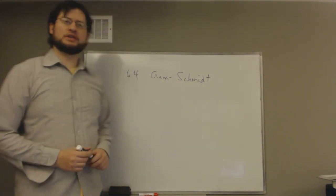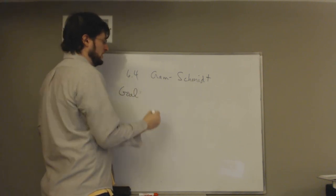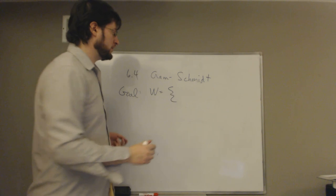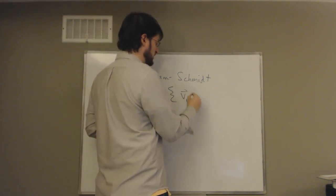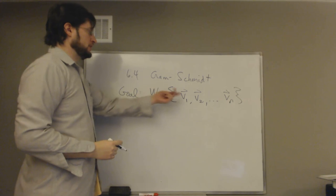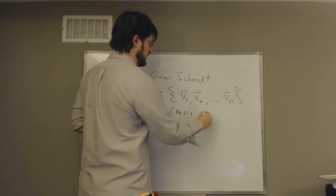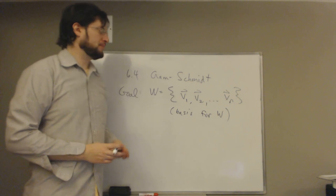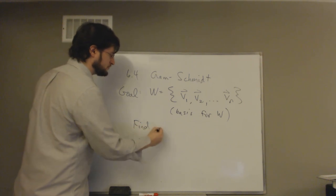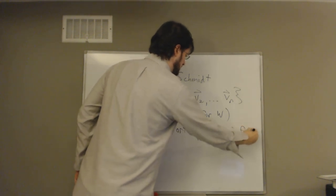Today we're going to look at section 6.4, the Gram-Schmidt process. As mentioned at the end of the last section, our goal is to take a set of vectors that span a subspace W — call them V1, V2 through Vn — where W is the span of these vectors and they form a basis. So they're linearly independent, and our goal is to find an orthogonal basis for W.